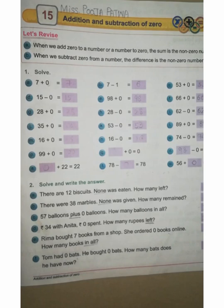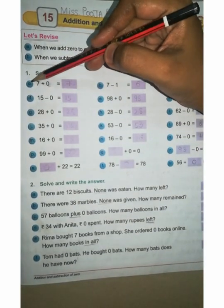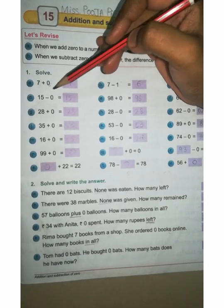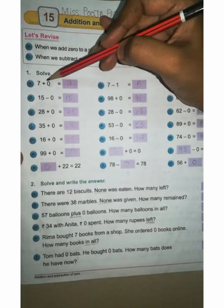Hello children, today we learn an interesting chapter, Chapter 15: Addition and Subtraction of Zero, page number 27. Now number one, solve. A: 7 plus 0. Zero children, there is no value, equal to dash. Now 7 plus 0, as it is, you can write 7.